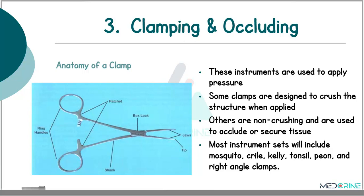Before we proceed, we need to know the anatomy of a clamp — the parts of a clamp and their names. A clamp has ring handles, ratchet, shank, box lock, jaws and tips.